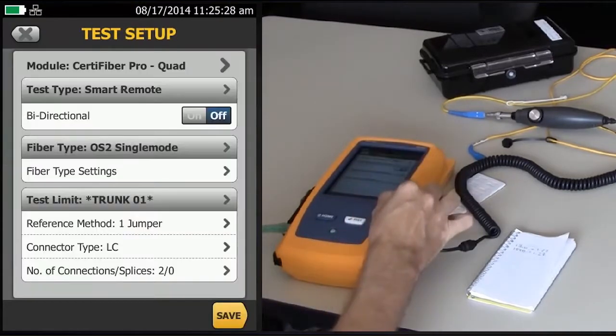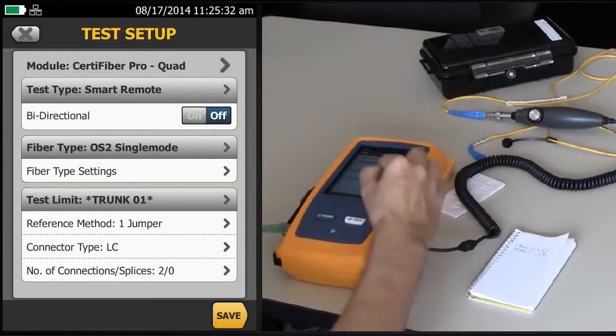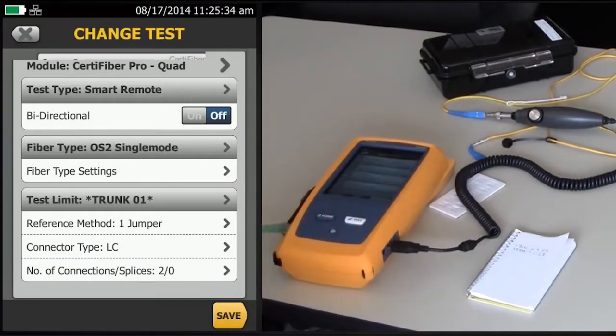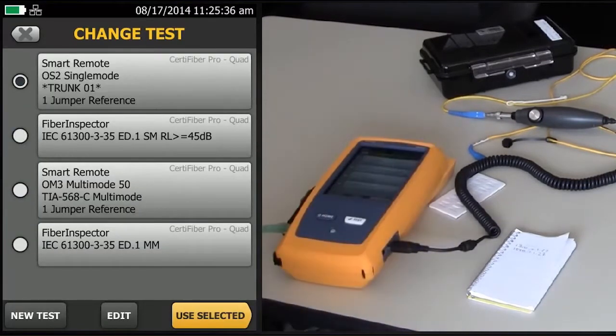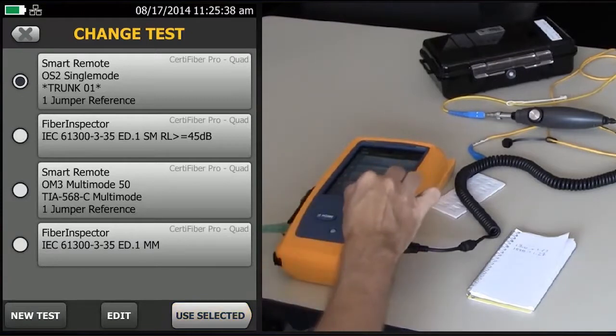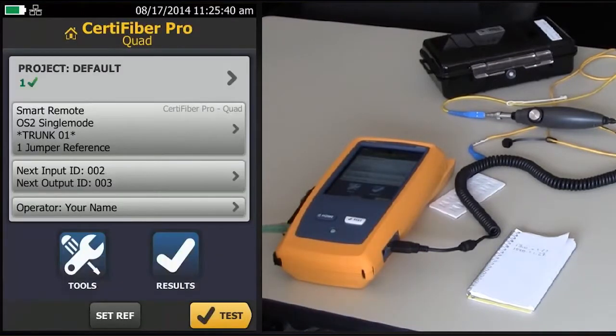And everything else here is good. So, Save. Here is my new test setup. Use Selected, and I'm ready to go. In the current version of firmware that I'm using here, you're allowed to put in up to 20 custom fiber optic limits for the CertiFiber Pro.